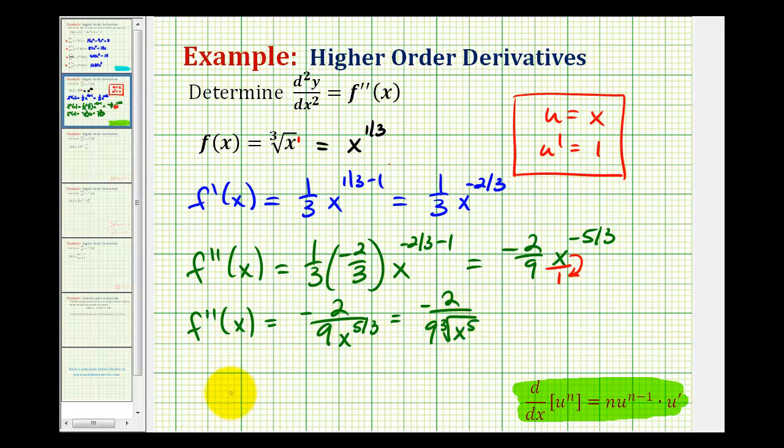And just to review, if we have the cube root of x to the fifth, three factors of x would be a perfect cube. So this simplifies to x times the cube root of x to the second.